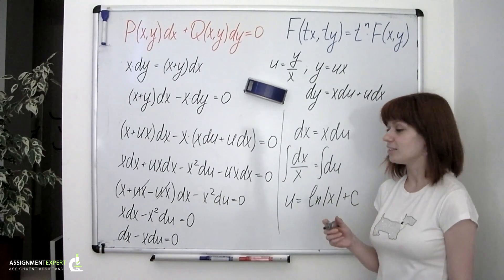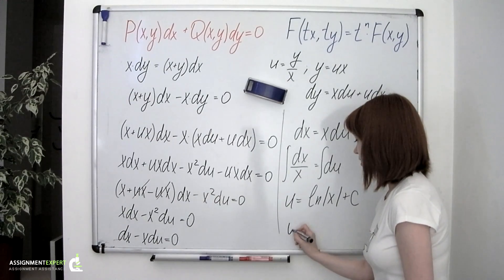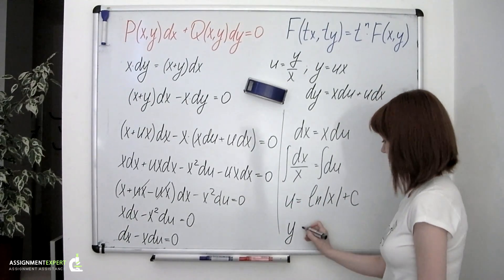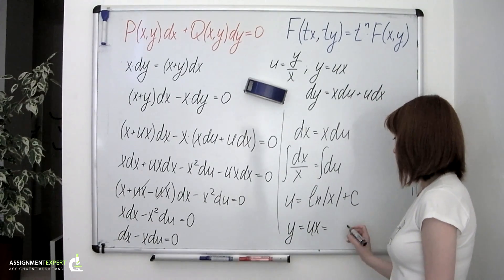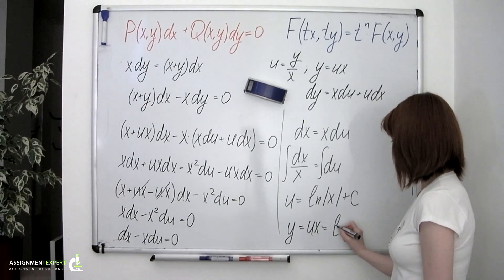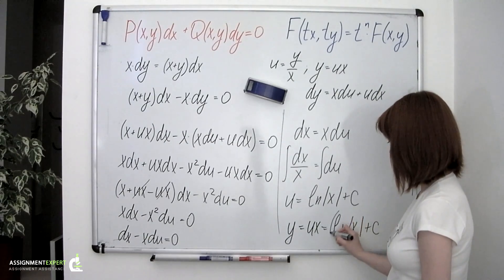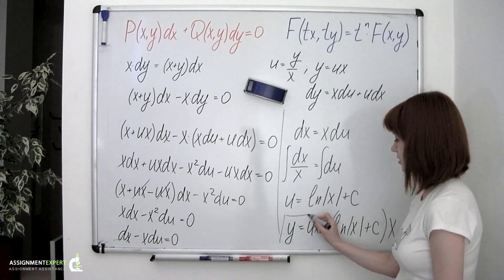And then finally, our last step is to return to the y variable. And we do that by using y equals u times x, or ln of the absolute value of x plus the constant, multiplied by x. And this is our answer.